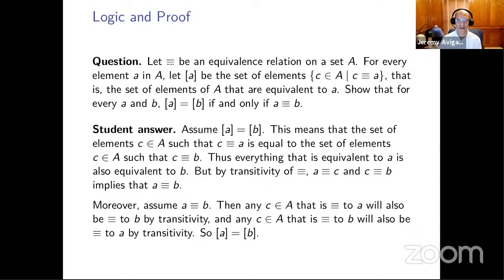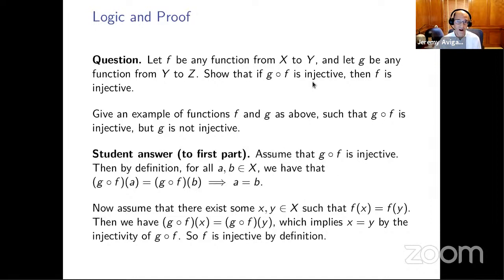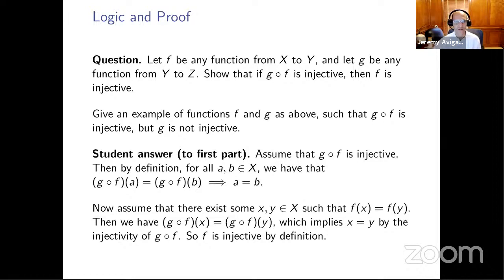For another example, after talking about injective and surjective functions, a homework problem asks them to show that if G composed with F is injective, then F is injective. A student answer might say: assume G∘F is injective, then by definition for all A and B... Students often just state the definition. We tell them: you don't need to tell us the definition — just use it correctly. We also tell students not to use logical arrows, just use natural language. The proof isn't bad, but they sometimes say 'assume there exists some X and Y such that F(X)=F(Y)' when they really mean 'let X and Y be arbitrary elements.' These are examples of students learning how to write proofs and doing it okay but not great.